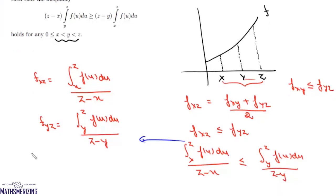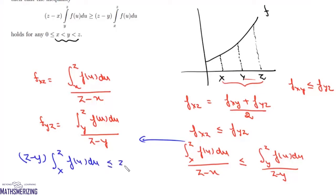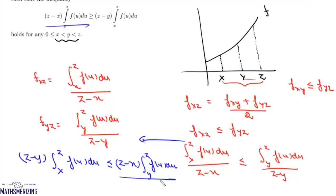Now cross-multiplying, we get (z − x) ∫[y to z] f(u) du ≥ (z − y) ∫[x to z] f(u) du. And this is how we prove such questions.